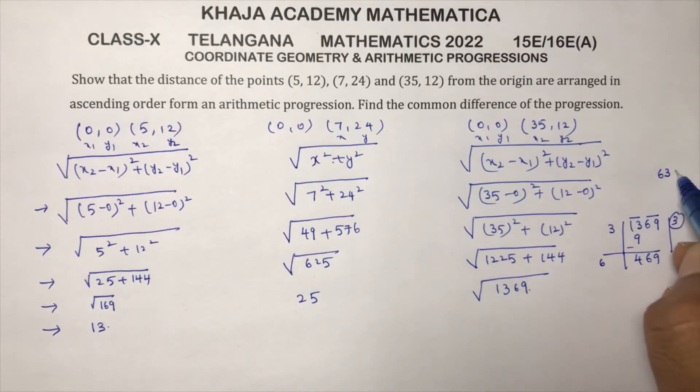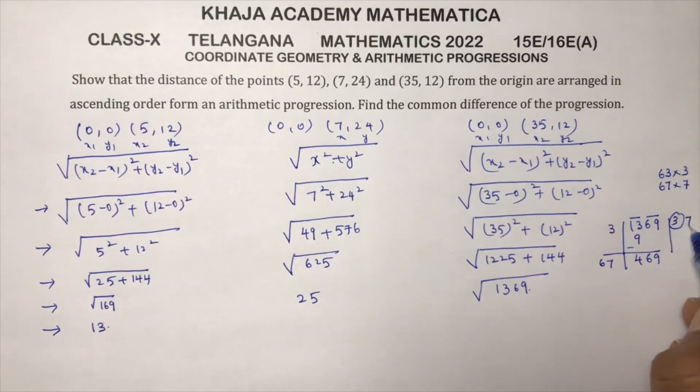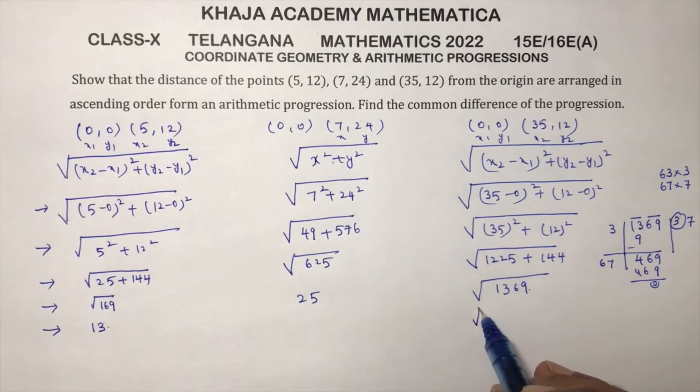If we subtract, 469. Now I need to double this digit 6, and here see the condition is 63 times 3, but 67 times 7, you'll get 469. So 1369 is 37 times 37, so the value is 37.